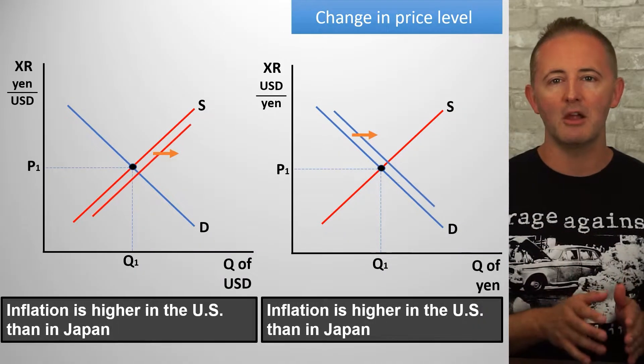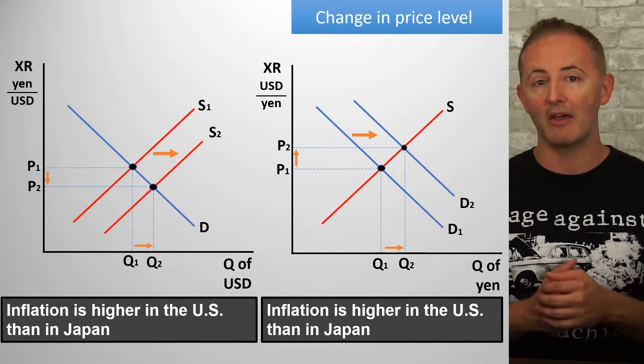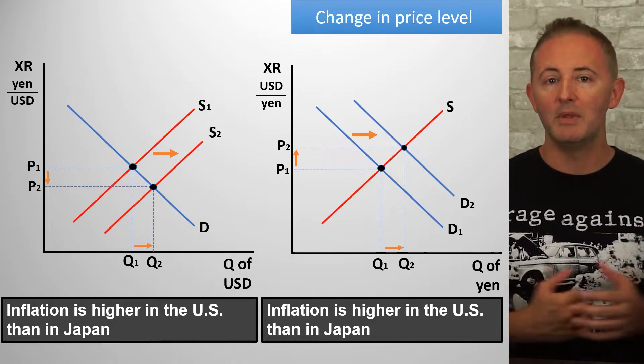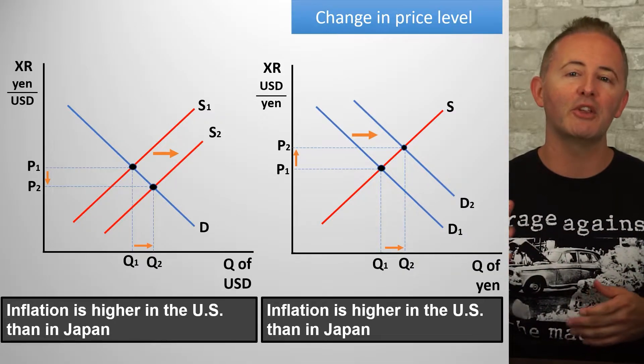Let's see this same scenario from a slightly different perspective. The U.S. has a higher inflation rate than Japan. The first time we thought of this in terms of Japanese people not wanting to buy as much American stuff. But it's just as true to say that Americans will want to buy more Japanese-made stuff because it's become relatively cheaper, in which case demand for the yen increases as does the supply of the dollar. Both of these are correct ways to respond to the question. My advice is to figure out if people are going to be buying more American or more Japanese stuff — that gives you the demand shifts — and then decide how that change in demand for one currency affects the supply of the other currency.